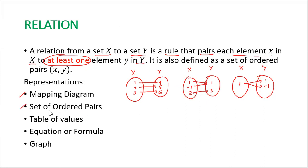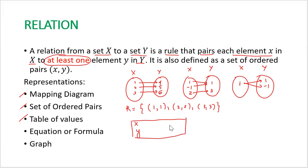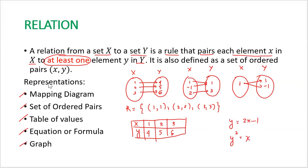Relations can also be represented as sets of ordered pairs, or in table of values form where x and y values are written as row headings with corresponding values below. Relations can also be represented by an equation or formula — for example, y equals 2x minus 1, or y squared equals x. Finally, relations can be represented in graphical form, since graphs are just sets of points plotted in the Cartesian plane.